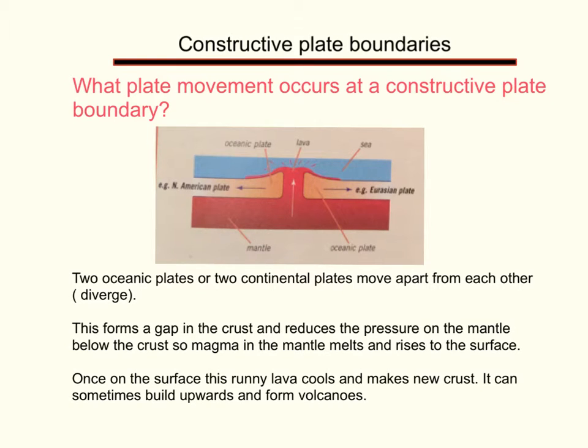So we'll start with the plate movement that occurs at a constructive plate boundary. As shown by the diagram, you have two oceanic plates or two continental plates that move apart from each other, as shown by the arrows here. Sometimes we call that diverging. This then forms a gap in the middle between the two plates.